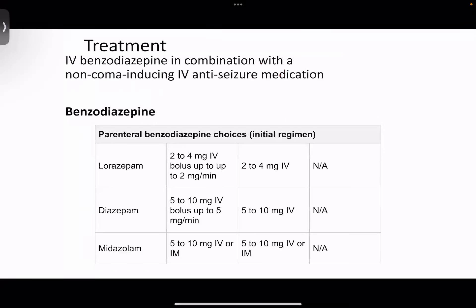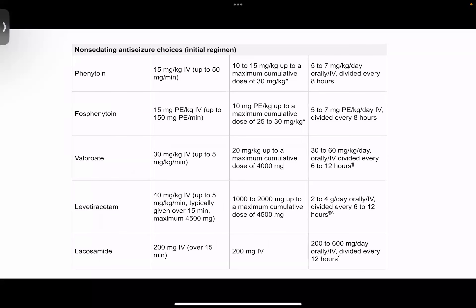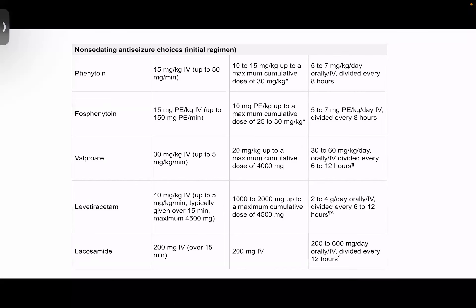Treatment for non-convulsive status epilepticus is more or less the same as for convulsive status epilepticus. IV benzodiazepine in combination with a non-coma-inducing IV antiseizure medication is the choice. Among IV medications we have lorazepam and midazolam; among antiseizure medications we have levetiracetam, sodium valproate, phenytoin, and in addition, fosphenytoin and lacosamide can be used.